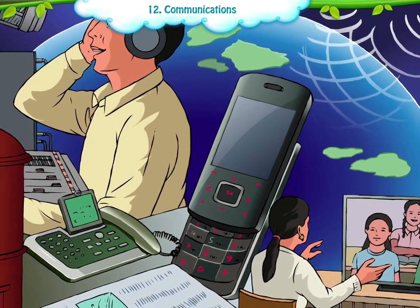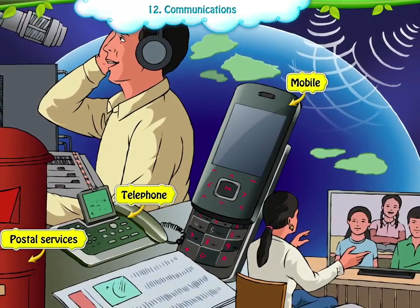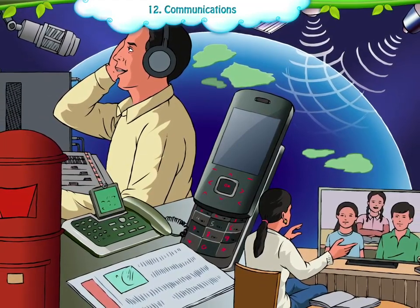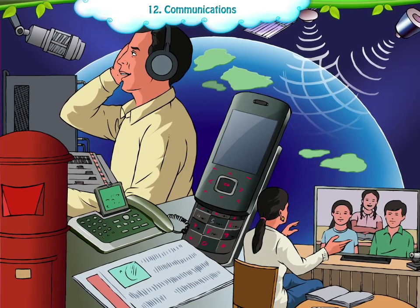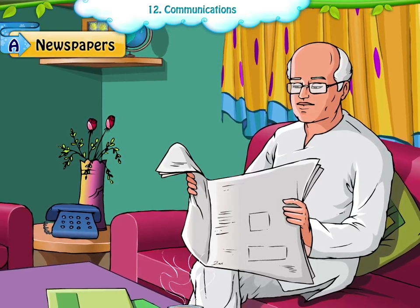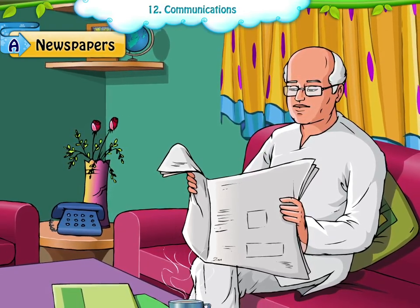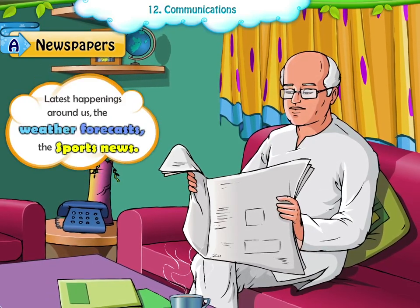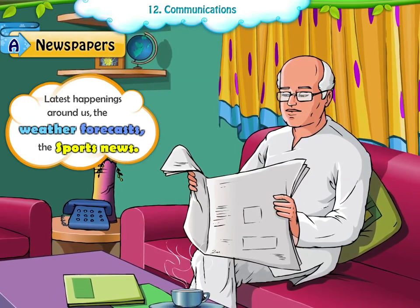We can individually use postal services, telephone and mobile phones as means of communication. But if we have to communicate to people on a large scale in the society, then the following means of communication can be used. A. Newspapers. Important incidents, happenings in the world, country or village can be read in the newspapers. We can come to know the latest happenings around us, the weather forecast, the sports news and other such useful information through the newspaper.